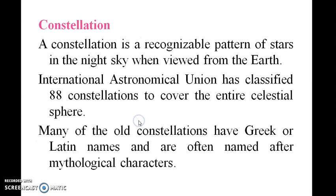A constellation is a recognizable pattern of stars in the night sky when viewed from the Earth. The International Astronomical Union has classified 88 constellations to cover the entire celestial sphere. Many of the old constellations have Greek or Latin names and are often named after mythological characters.